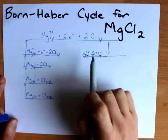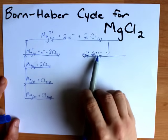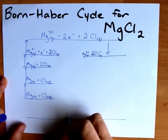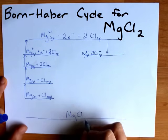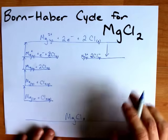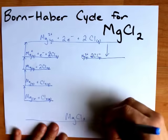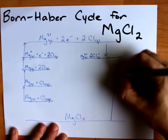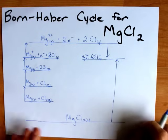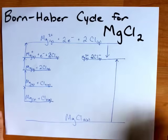Now, the combination of two gas phase ions to make solid magnesium chloride is the lattice enthalpy. I see lattice enthalpy most commonly given as an endothermic process, so I'm going to draw an up arrow between my solid magnesium chloride and the gas phase ions.